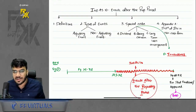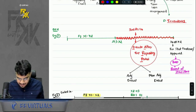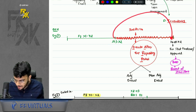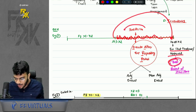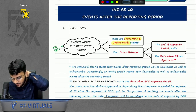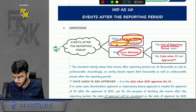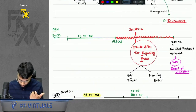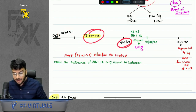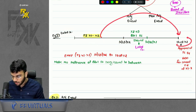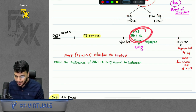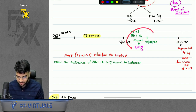What is Events After the Reporting Period? Let's say this is my financial year end. The events which occur between the year end and the date when financials are approved by the Board of Directors are called events after the reporting period. If I am a listed company and a quarterly statement was submitted between these dates, it does not impact the events after reporting period — there is no relevance of that issuance.